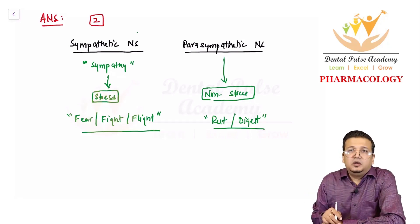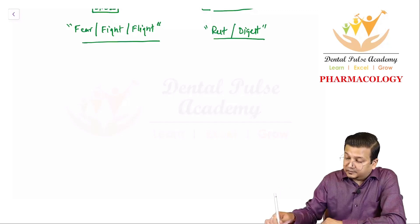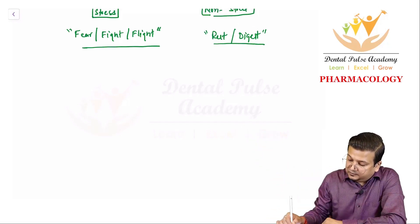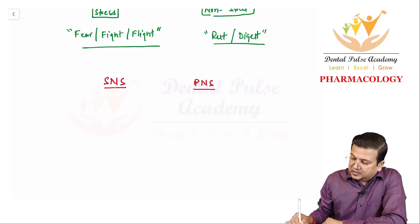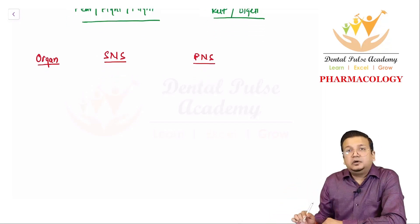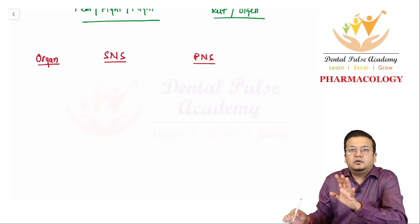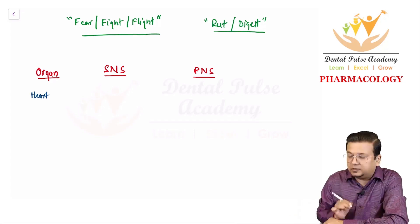Now let's look at the broad effects of the sympathetic and parasympathetic systems on the major organs. We'll use SNS for sympathetic nervous system and PNS for parasympathetic nervous system, and draw a table with the organ, effect of sympathetic, and effect of parasympathetic. The first organ is the heart.